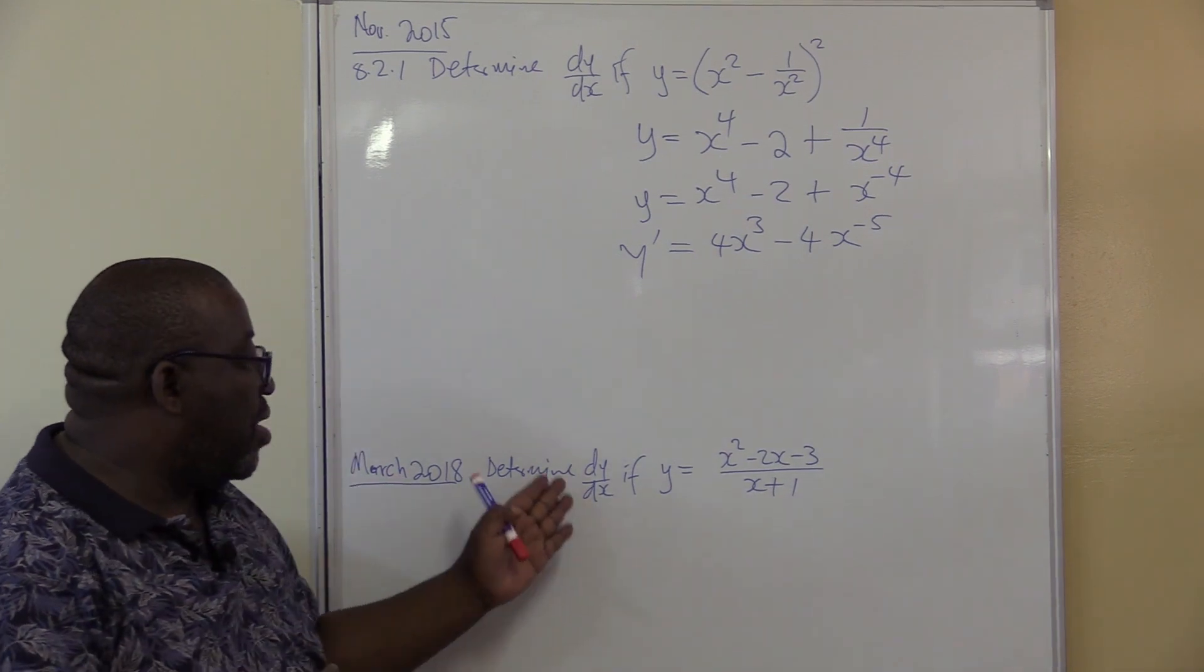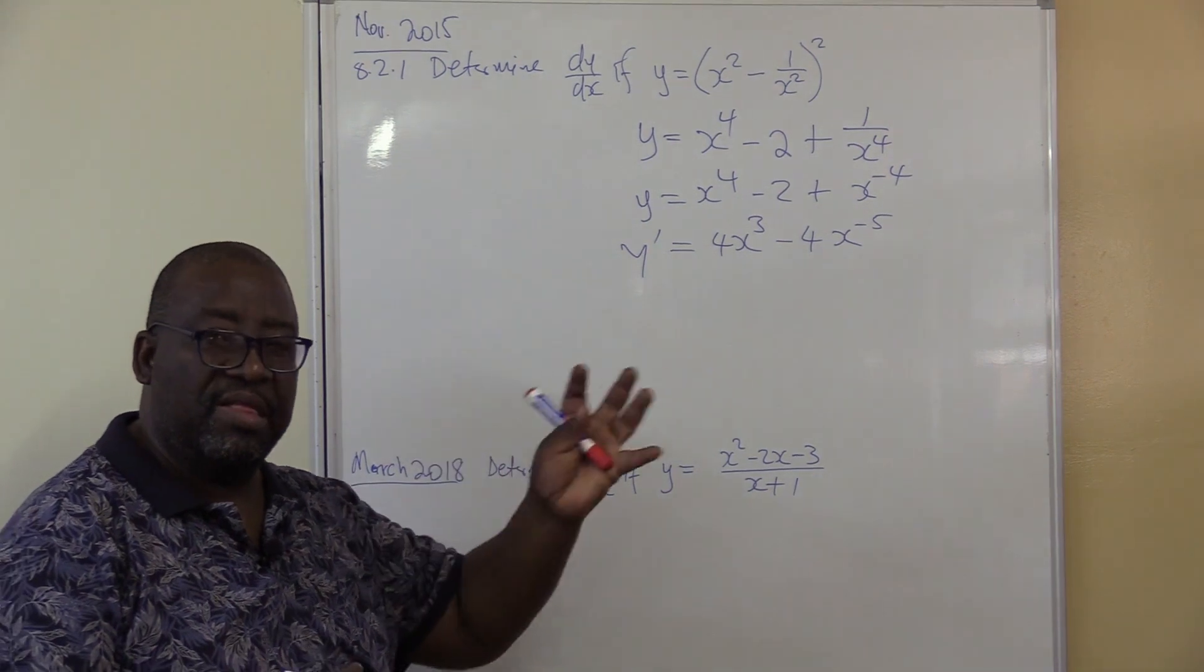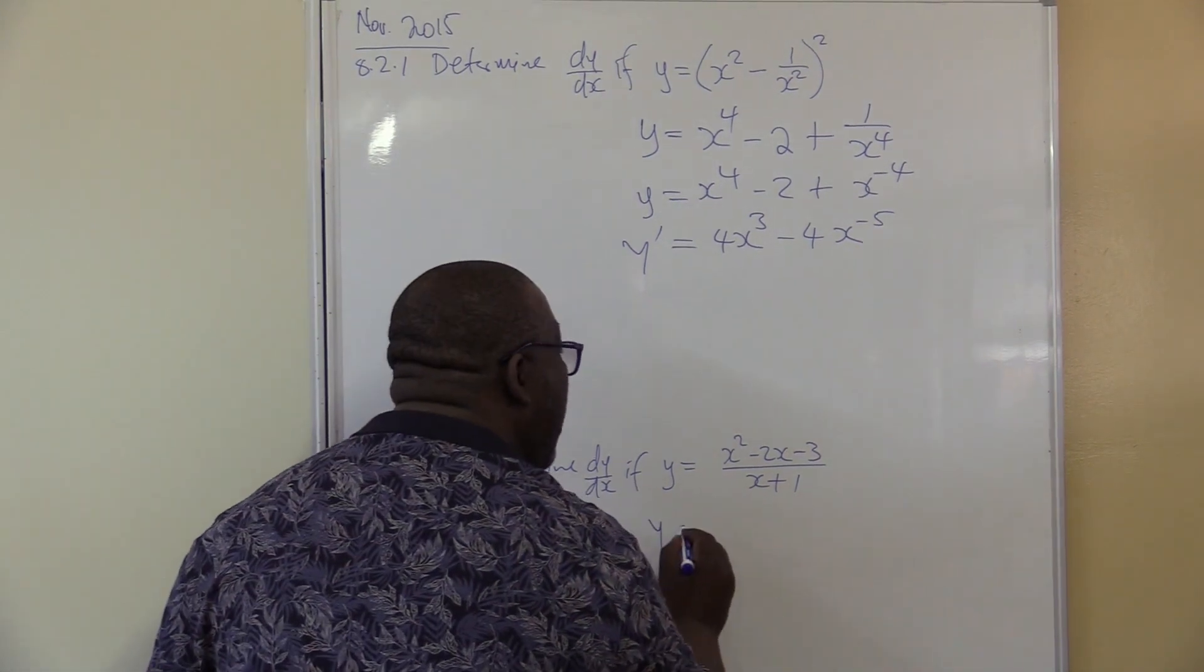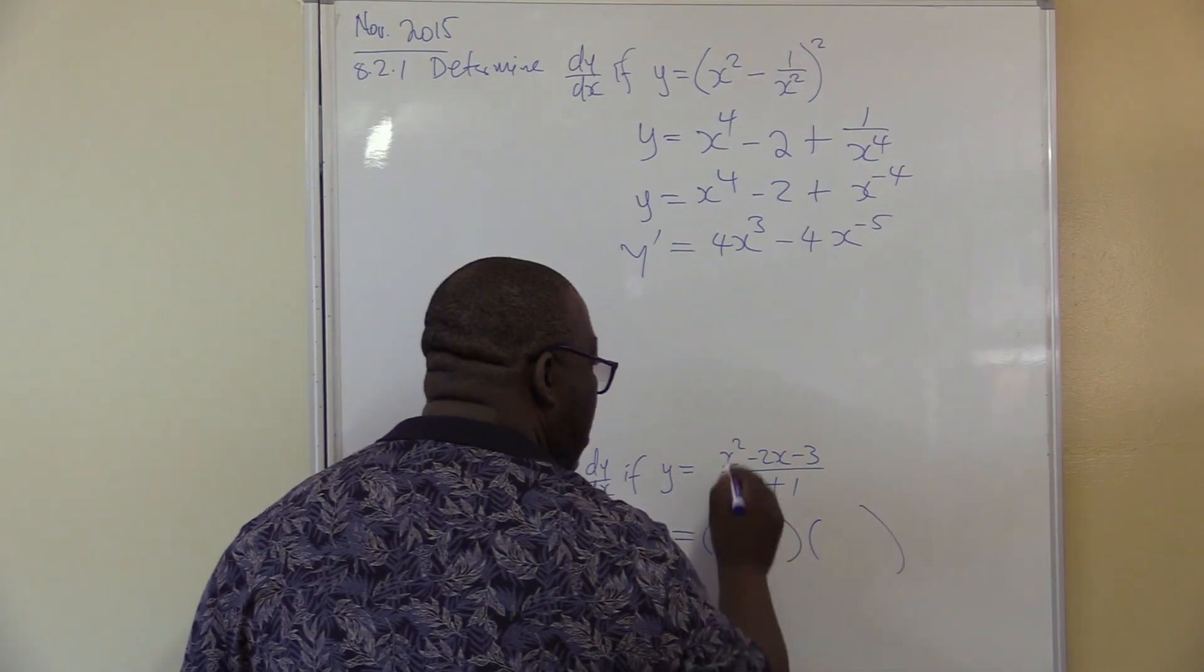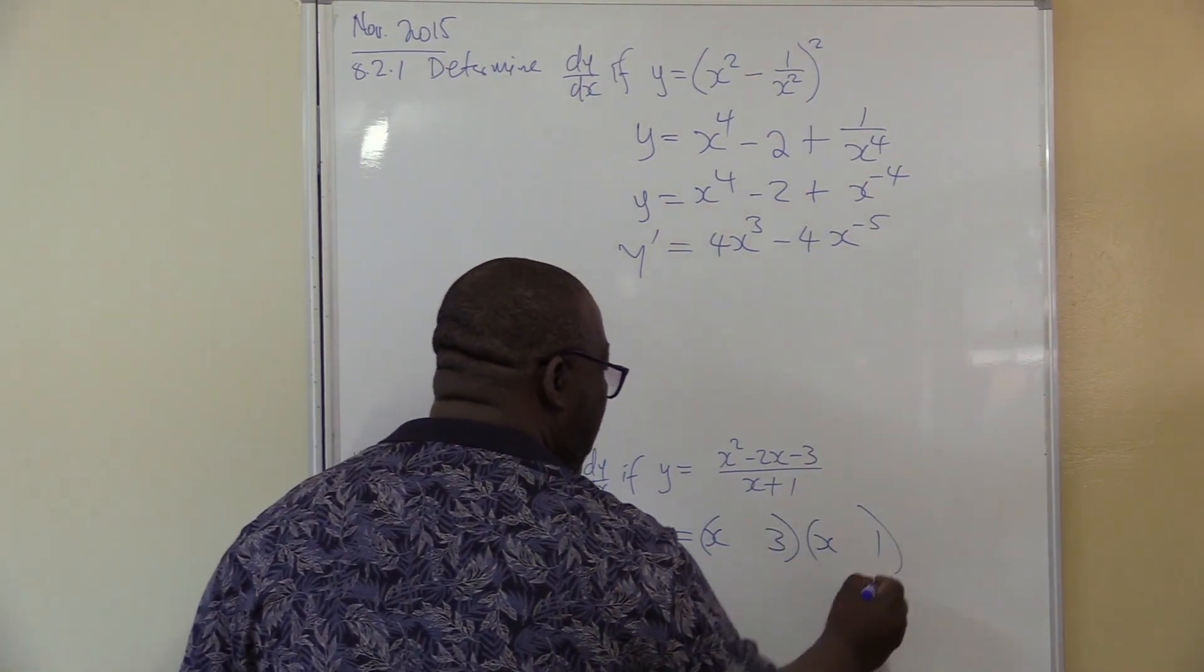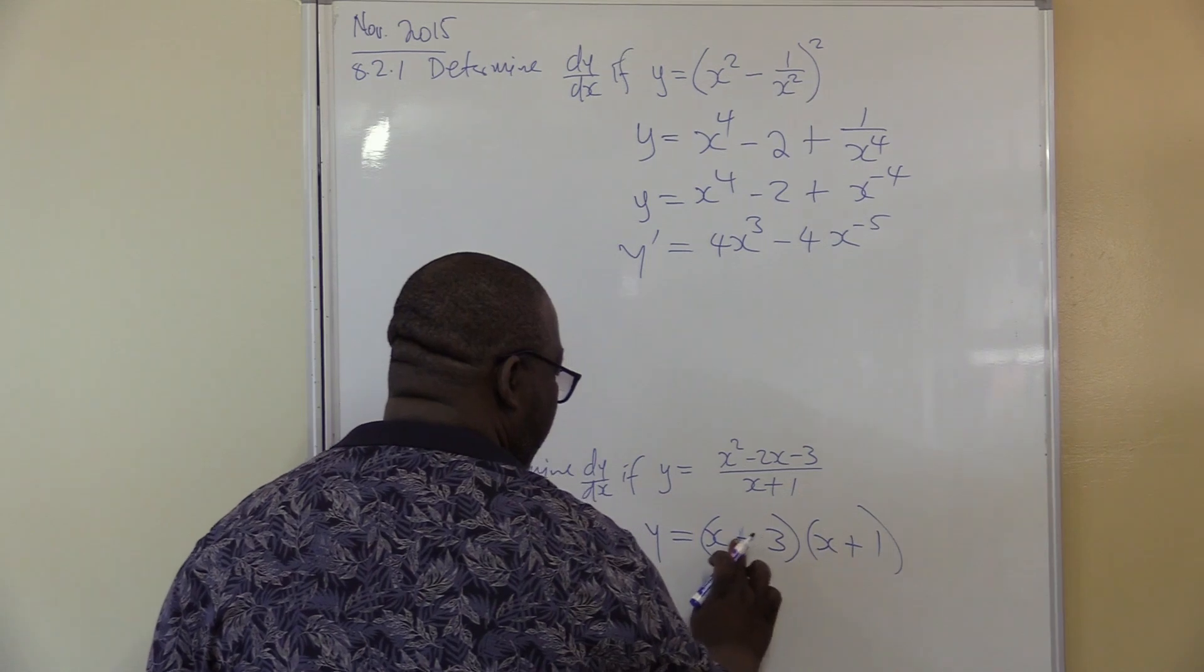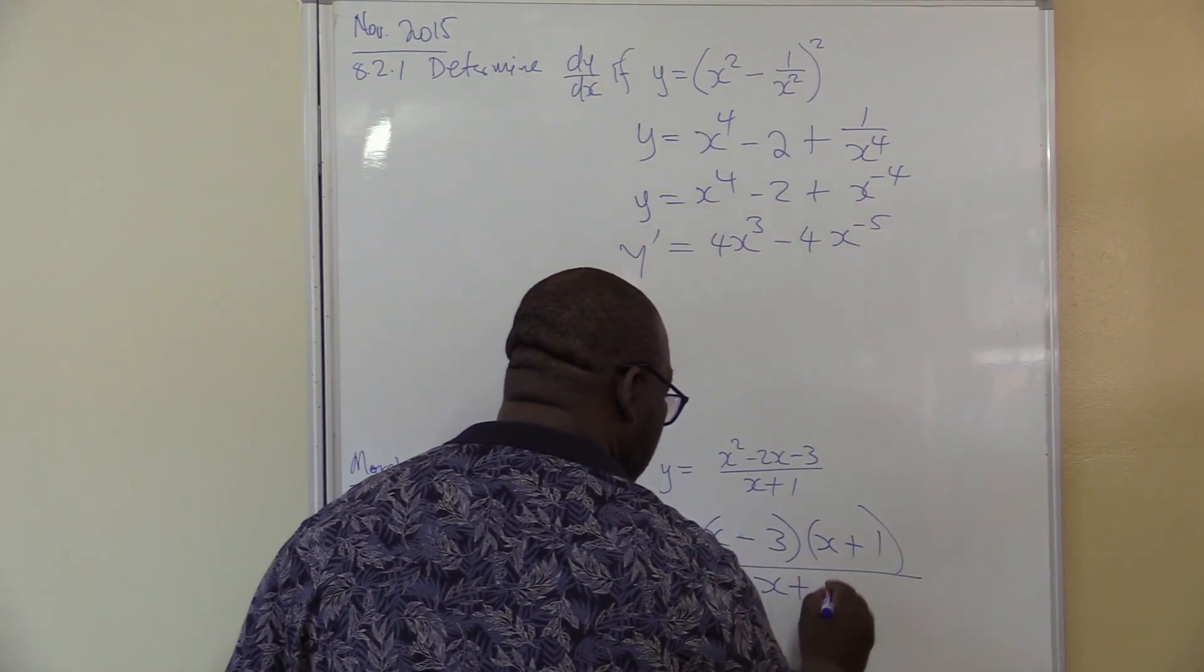Lastly, determine dy over dx. If once you see it in this form, think of factorization. Think of factorization. You factorize this such that there is x plus 1. Let's quickly wrap up. We've got y equals, if I factorize that one, I will have this is x, this is x, factors of 3, 3 and 1. Because this is negative, the bigger one must be negative. The smaller one must be positive. That's what we have. Remember, this is all over x plus 1.